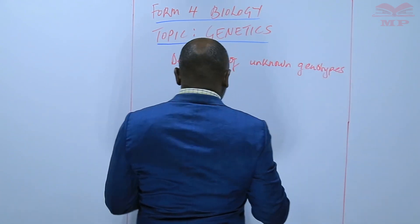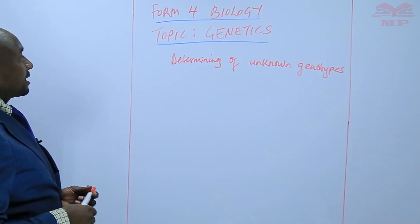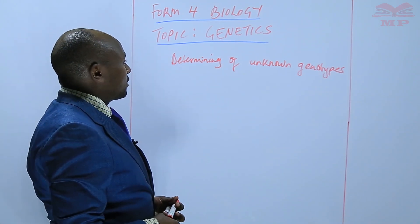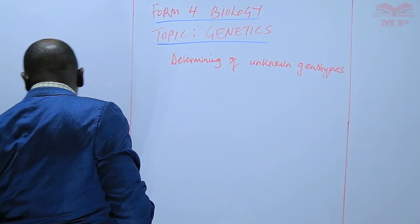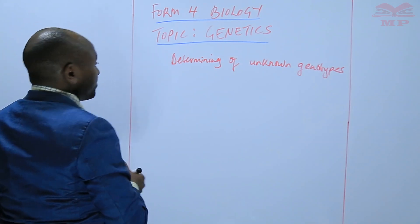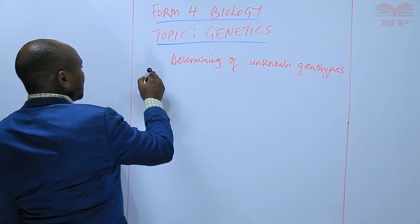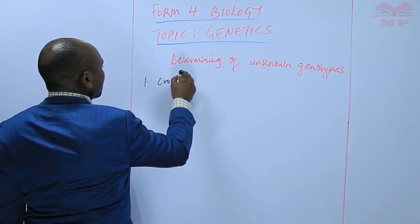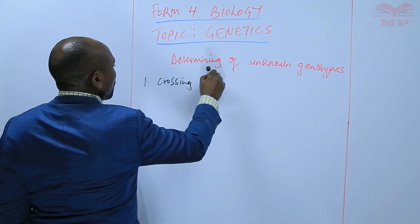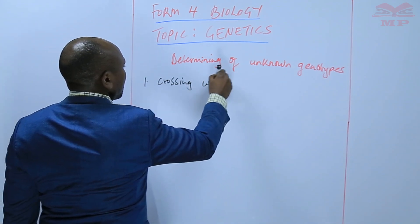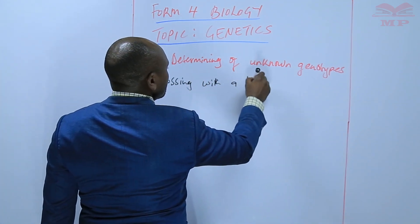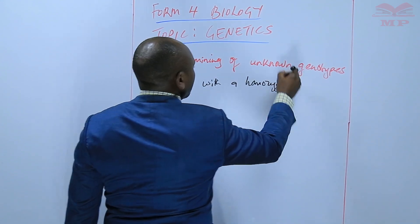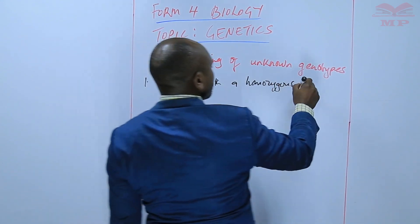So one of the ways of determining an unknown genotype is by doing something called crossing with a homozygous recessive.